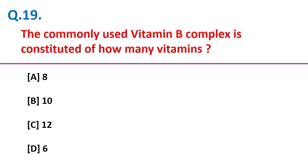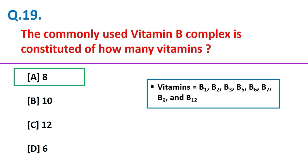The commonly used vitamin B complex is constituted of how many vitamins? 8 vitamins. They are vitamins B1, B2, B3, B5, B6, B7, B9, and B12.